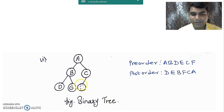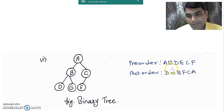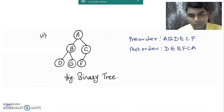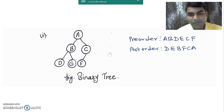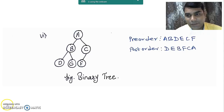So this is the final binary tree for the given pre-order and post-order traversal sequence. To check whether the resultant tree designed by you is correct or not, we traverse the tree in the pre-order and post-order fashion. If the result matches the sequences given in the question, it means the tree designed by you is correct, otherwise it is wrong. Thank you very much for watching this video.